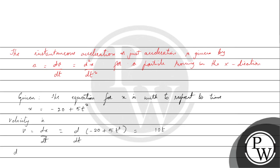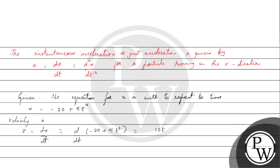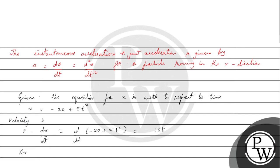Ab hum acceleration calculate karenge. Acceleration is a equal to dv by dt, which is d by dt of 10t, which gives us 10 m/s squared.